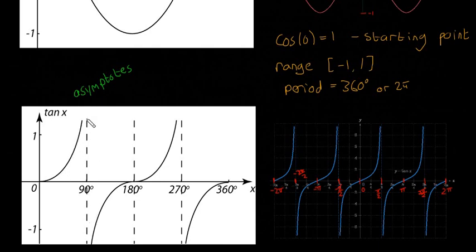So the graph will get really, really, really close, but it can never, ever touch this line here. So the further up you go, the closer it'll get, but it'll never touch it. That's important. That at 90 degrees, the graph of tan x doesn't exist.